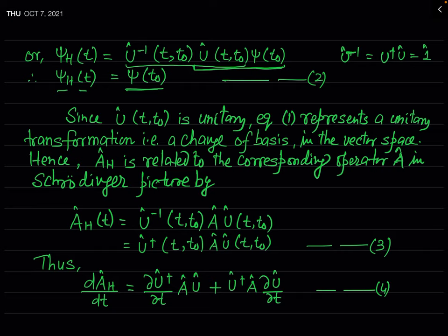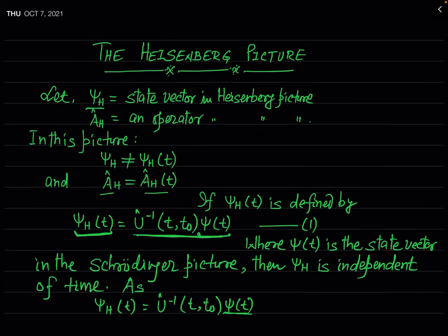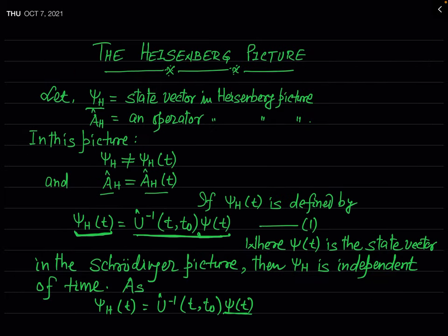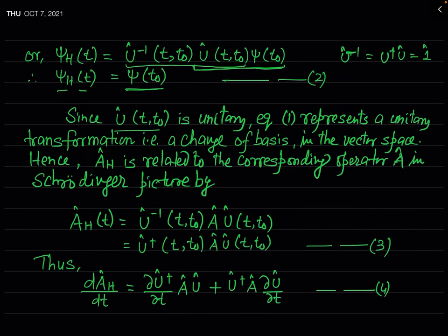In the Heisenberg picture the state vector is independent of time, and for this we must define ψ_H(t) by equation 1. The time evolution operator Û(t, t₀) is a unitary operator, so equation 1 is just a unitary transformation — essentially a change of basis from the Schrödinger picture to the Heisenberg picture in vector space.